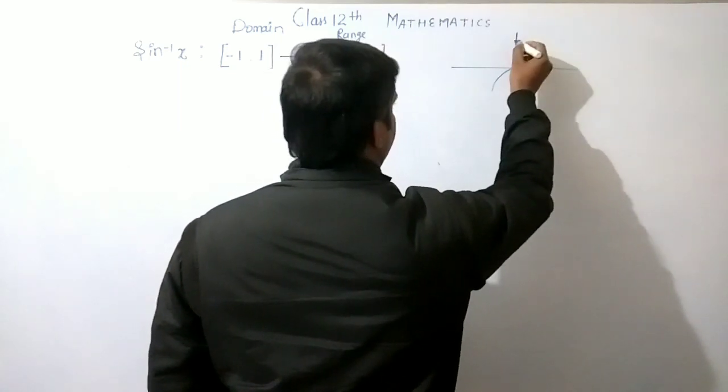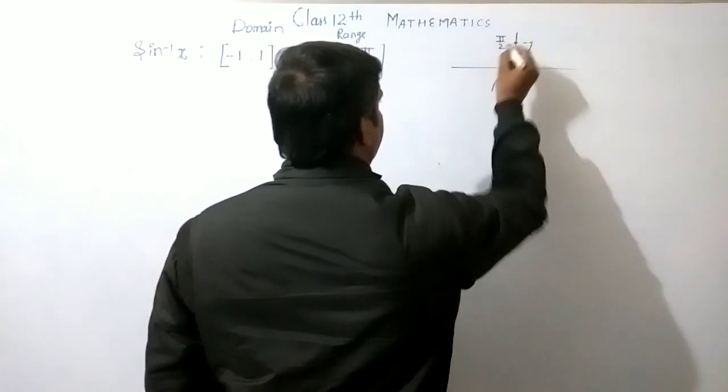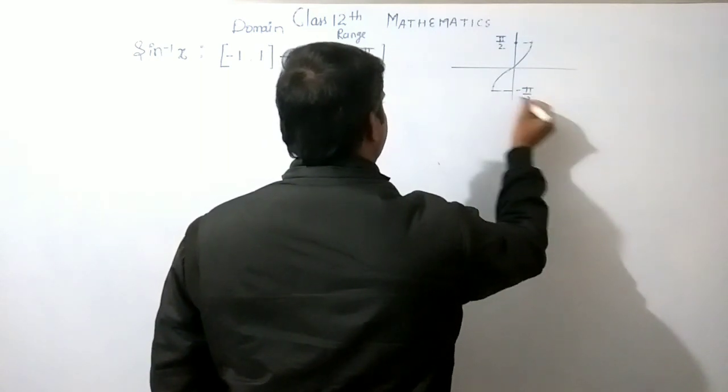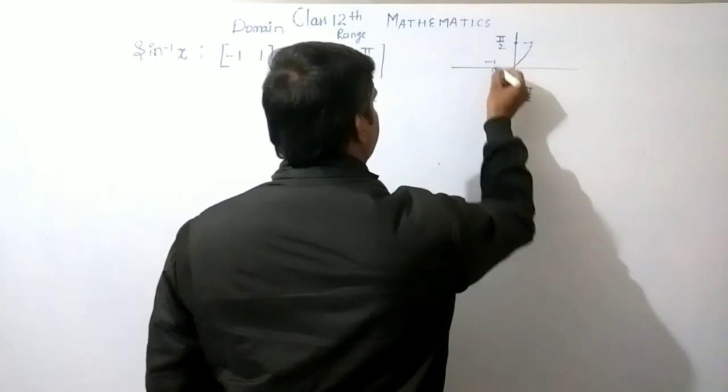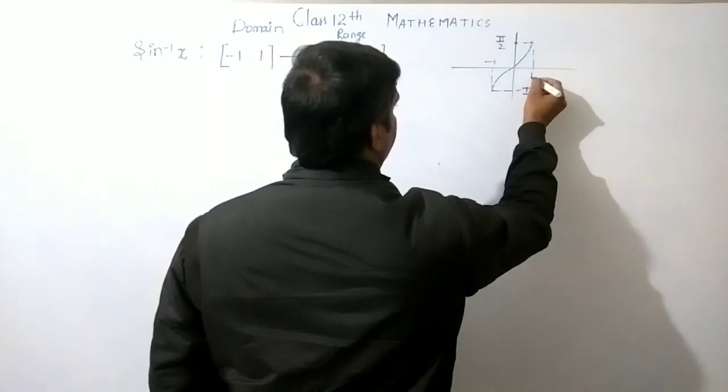Graph: this point is π/2 and this is -π/2. Now, -1 and this is 1.